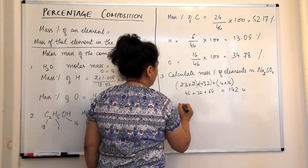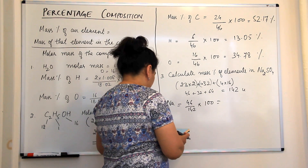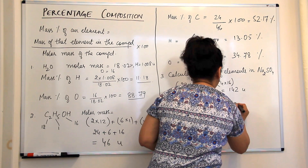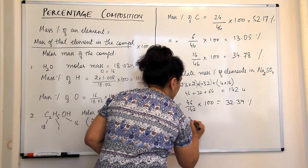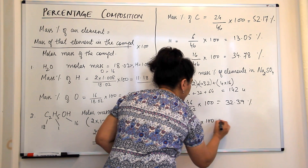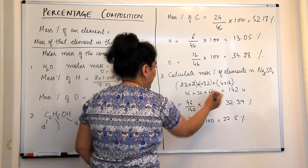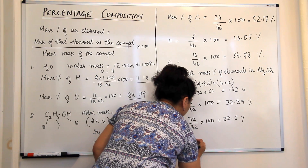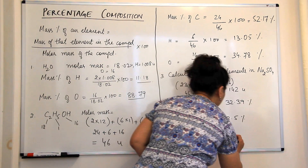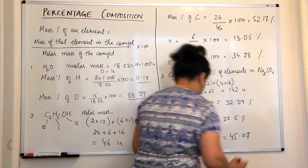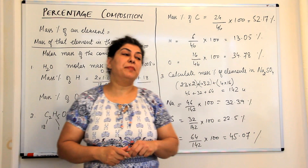For sodium sulfate (molar mass = 142 u): mass percentage of sodium = 46 ÷ 142 × 100 = 32.39%; mass percentage of sulfur = 32 ÷ 142 × 100 = 22.5%; mass percentage of oxygen = 64 ÷ 142 × 100 = 45.07%.